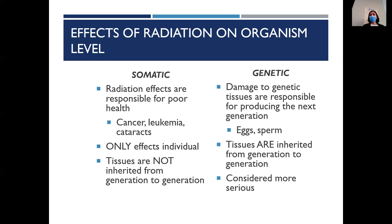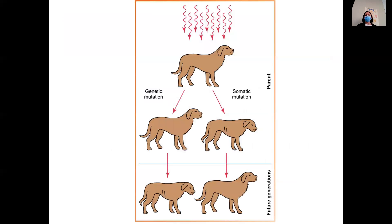Genetic effects are considered more serious because your body might be able to repair and heal somatic damage, but you don't want to damage the potential for all your kids to have a problem. There's an image that shows this visually — a dog is getting irradiated. If it's genetic, the dog is fine but the offspring is not feeling so hot. If it's somatic, the dog is not feeling so hot but future generations are okay.